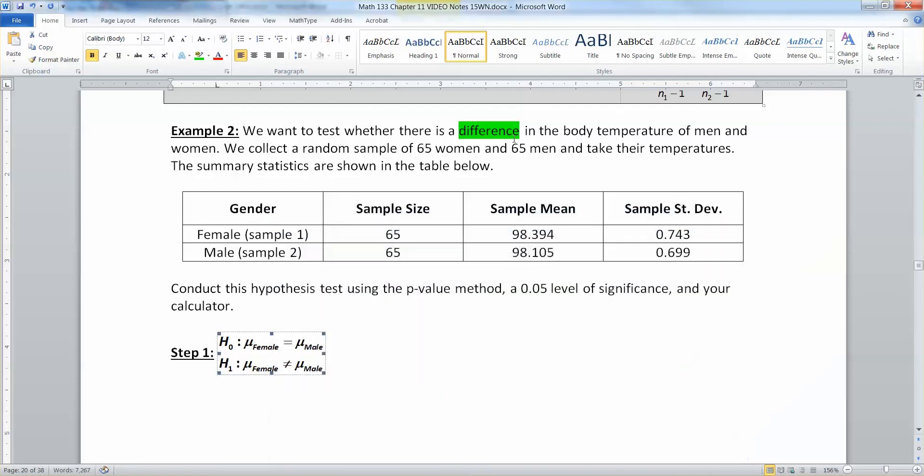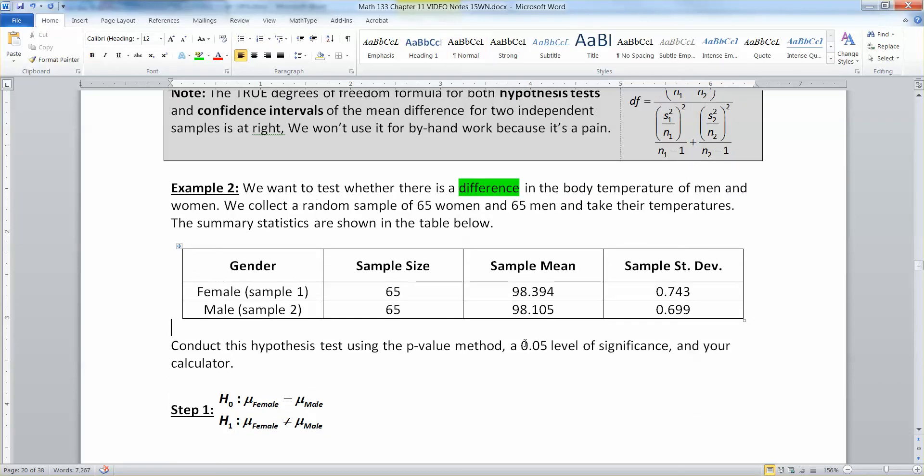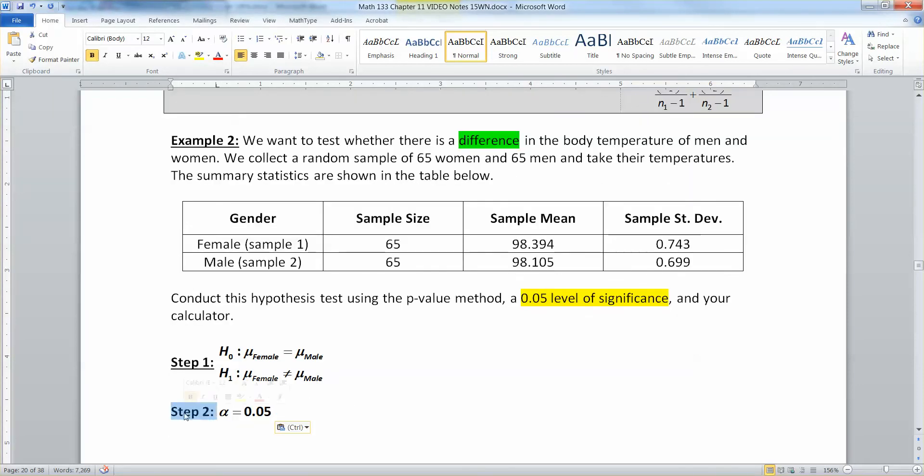And then your alternative is that they're not equal to each other. And that's all because of the word difference in there. If they had said men are greater than women or hotter than women, you'd go with a less than. And if women are hotter than men, you'd go with a greater than. Next, you need your alpha. Well, it says right here that you have a 0.05 level of significance. So that would mean α is 0.05. So that's done.